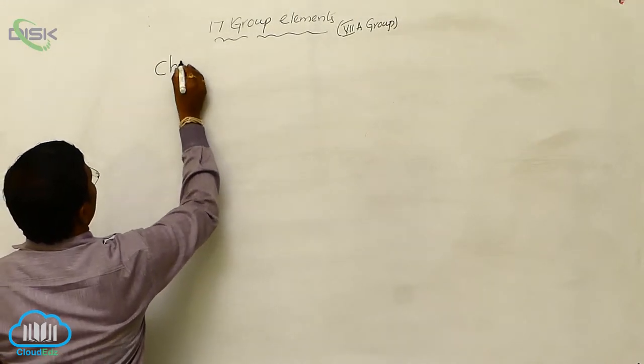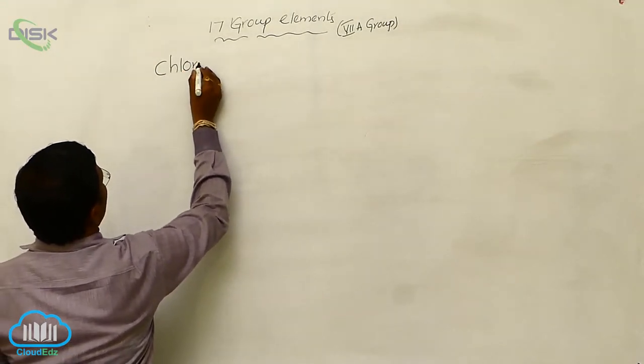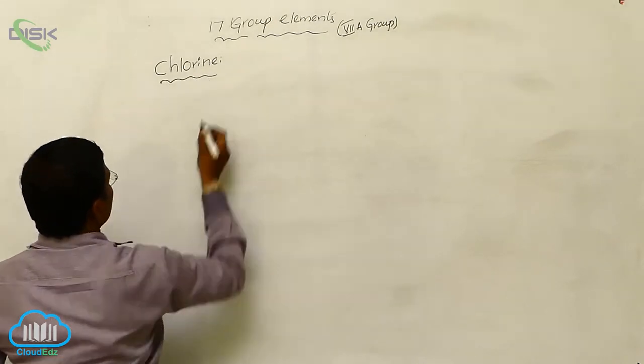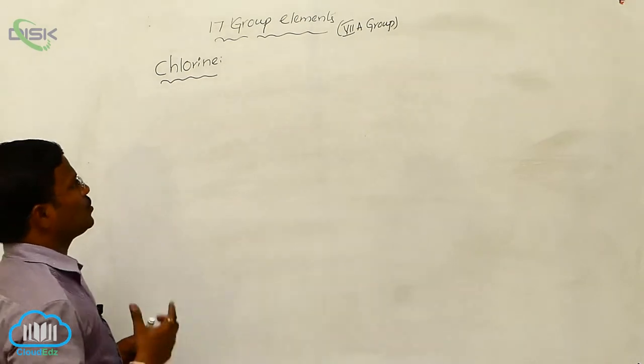The most important element belonging to the 17th group is chlorine. As fluorine is more reactive, it is better to learn more about chlorine.